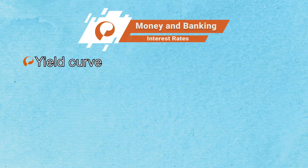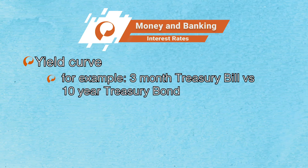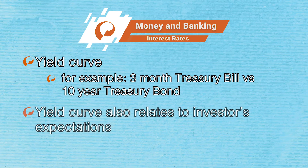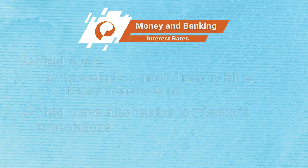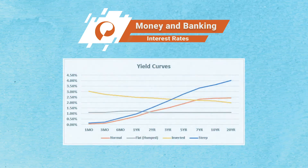A yield curve is a graph that shows the interest rate on similar securities with different terms to maturity — the time remaining before the principal is repaid. For example, a three-month treasury bill versus a 10-year treasury bond. There is also a relationship between the slope of the yield curve and investors' expectations of the future behavior of short-term interest rates. If investors believe that short-term interest rates will soon rise, the yield curve becomes flatter or even downward sloping.